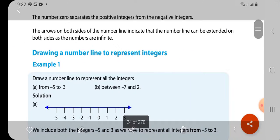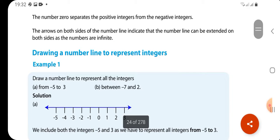Drawing a number line to represent integers from negative 5 to 3. Negative 5, negative 4, negative 3, negative 2, negative 1, 0, 1, 2, and 3. This is how to represent integers on a number line.